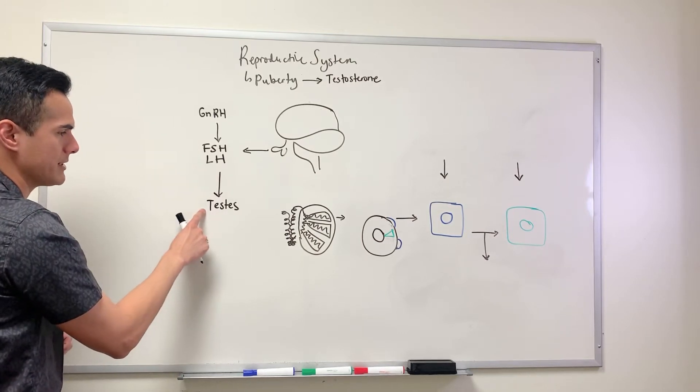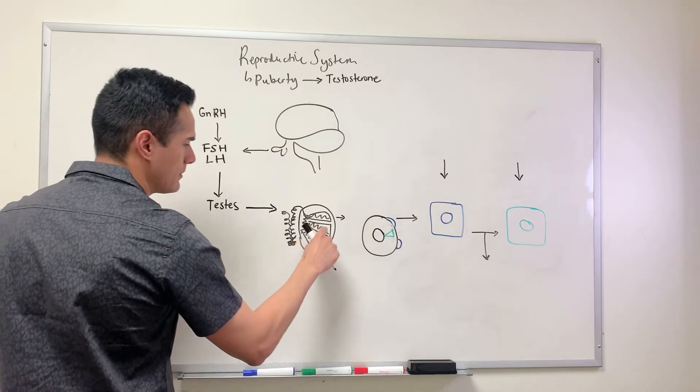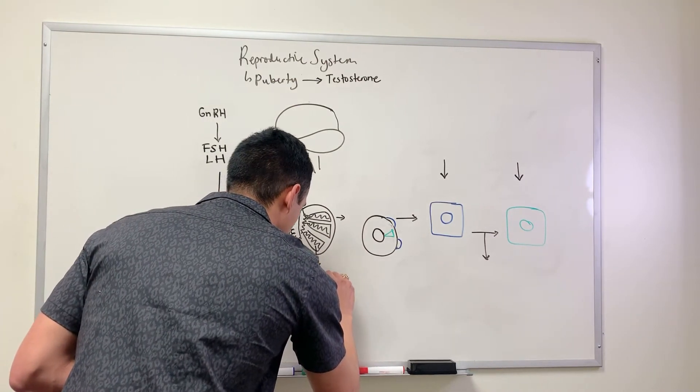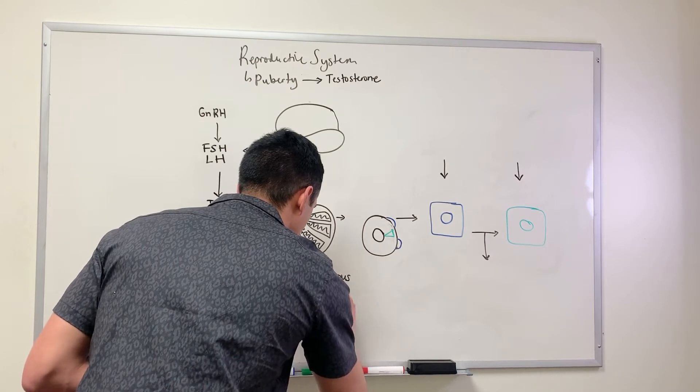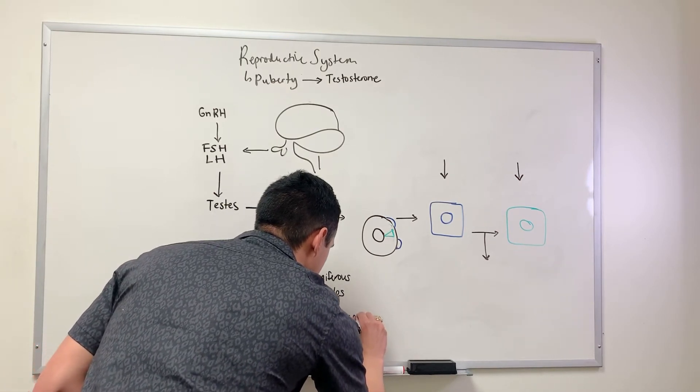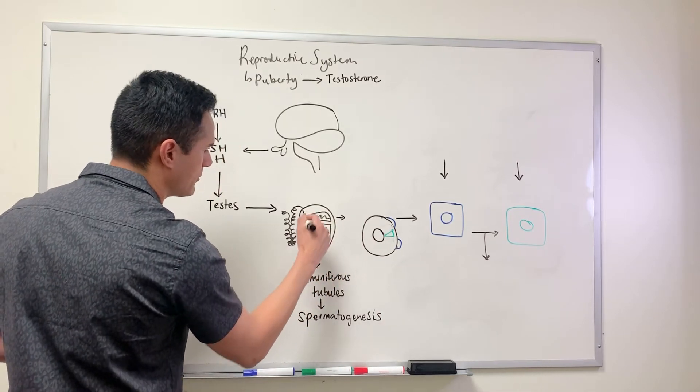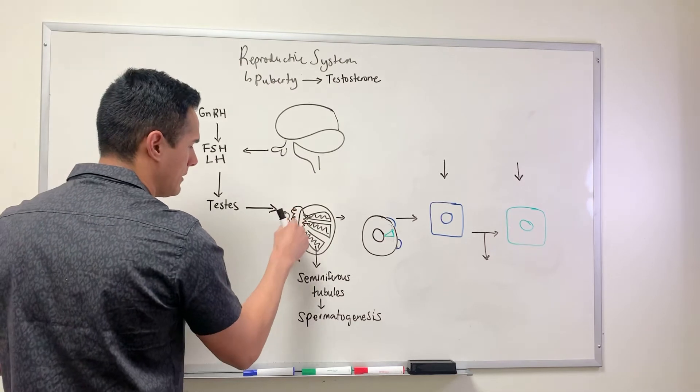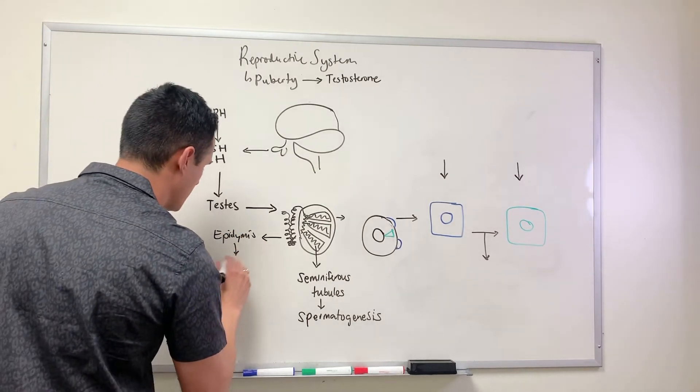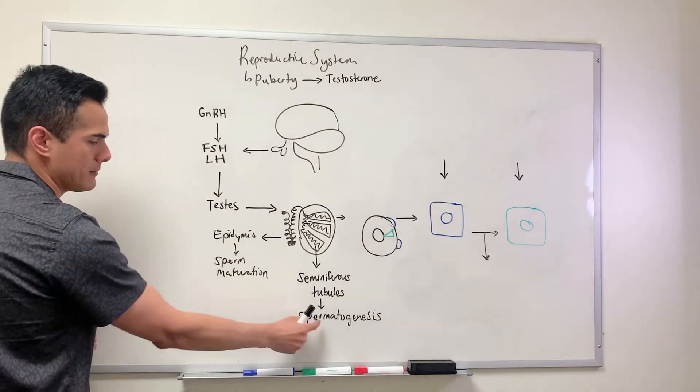FSH and LH get into the blood and reach the testes. What I have drawn here is a cross-section of the testes. You see these coiled tubes - these are the seminiferous tubules. This is the site for spermatogenesis, where sperm production occurs. These seminiferous tubules emerge here and form the rete testes, and this region over here is the epididymis - the site for sperm maturation.